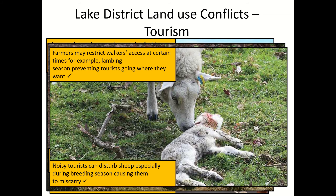Sometimes farmers will restrict access to certain areas, and that can annoy tourists, because tourists want to be able to walk over the hillsides and enjoy the landscape. But farmers will restrict access, especially during lambing season, because we don't want to disturb the sheep when they are lambing. Noisy tourists can disturb the sheep during the breeding season, causing them to miscarry. From the farmer's perspective, it's not only sad — it's also a financial impact, because that lamb represents profit; they would raise it to produce meat, wool, or milk, and that's a future profit lost to the farmer and his family.